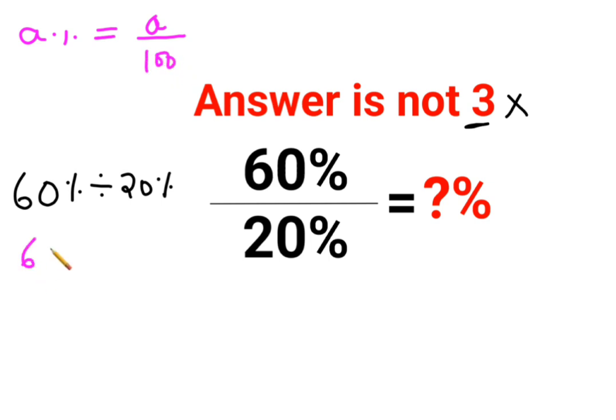So we have 60 upon 100, then we have division sign, then we again have 20% which can be written as 20 upon 100.